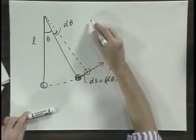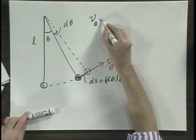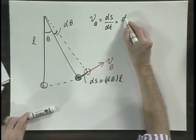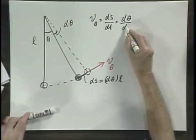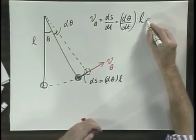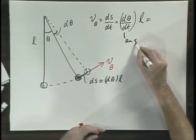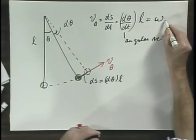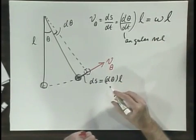So this velocity v theta, which is dS dt, becomes d theta dt times L. And this d theta dt, which is the angular velocity, is often called omega, and so this is omega L.